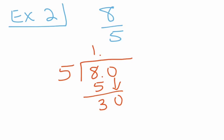Put a decimal after the 1. 5 goes into 30 six times. 6 times 5 is 30. And we end up with 0.